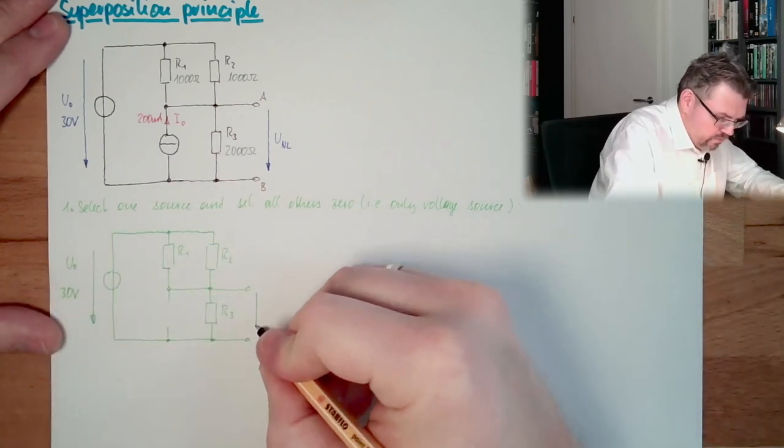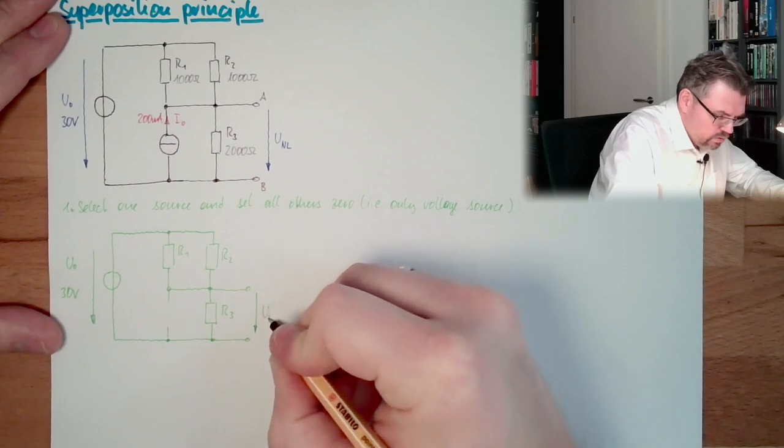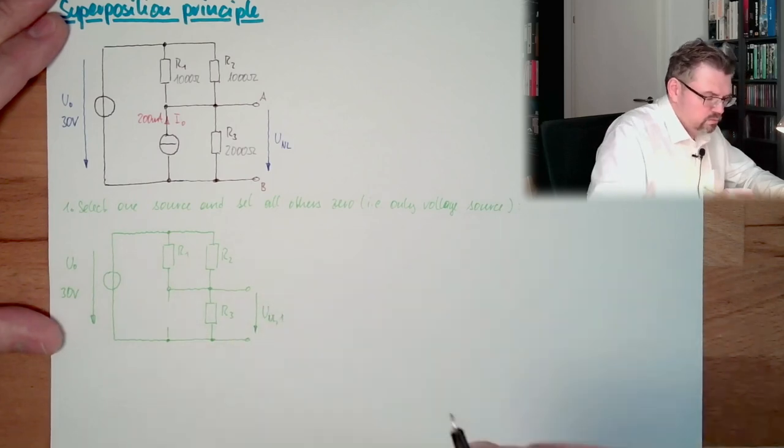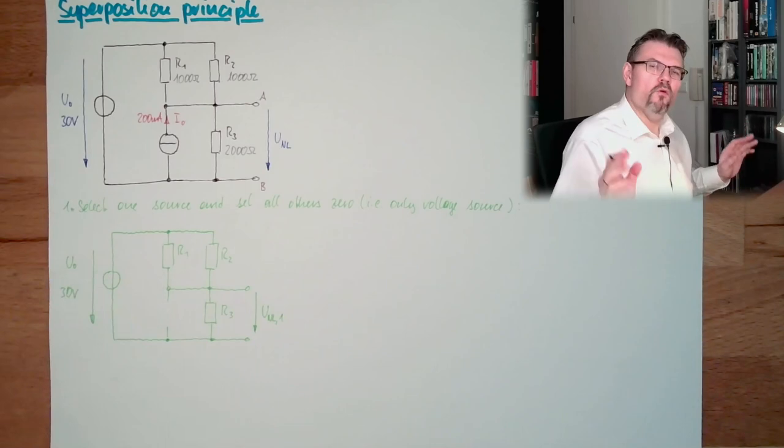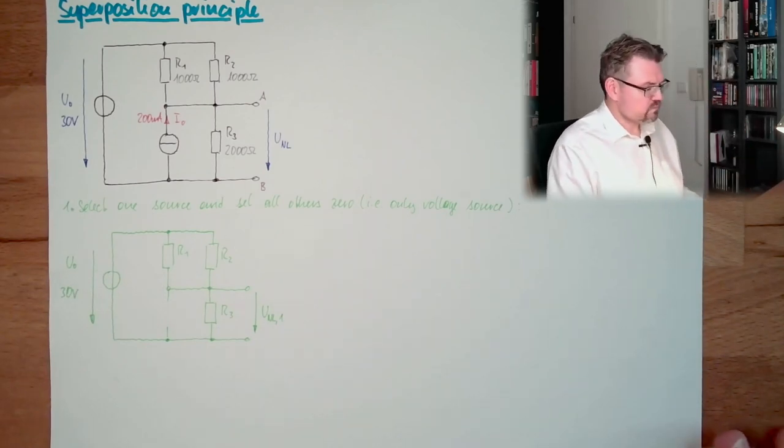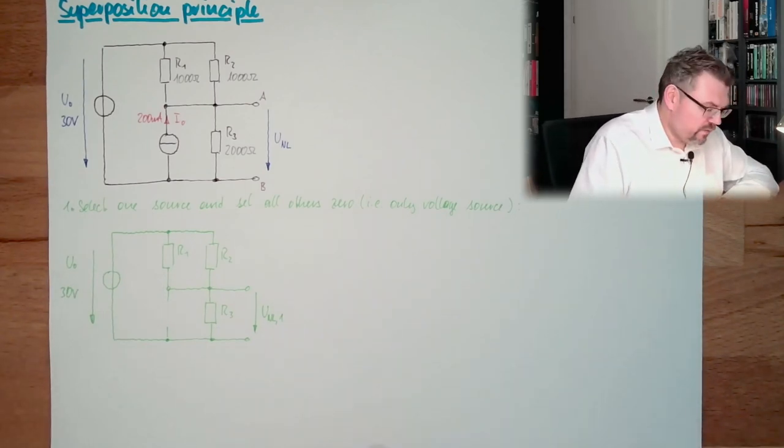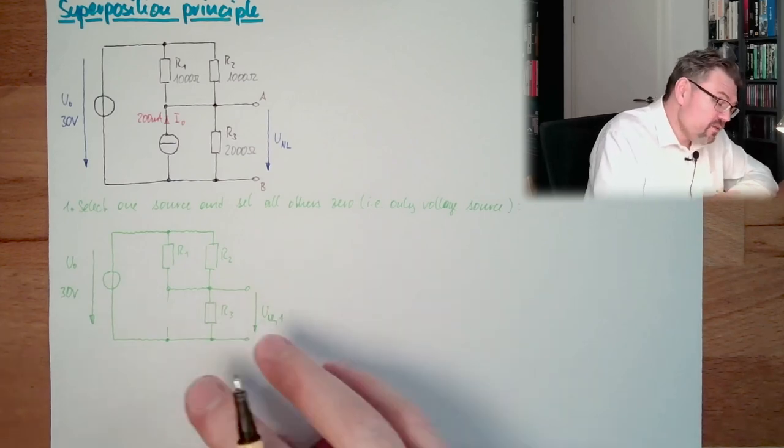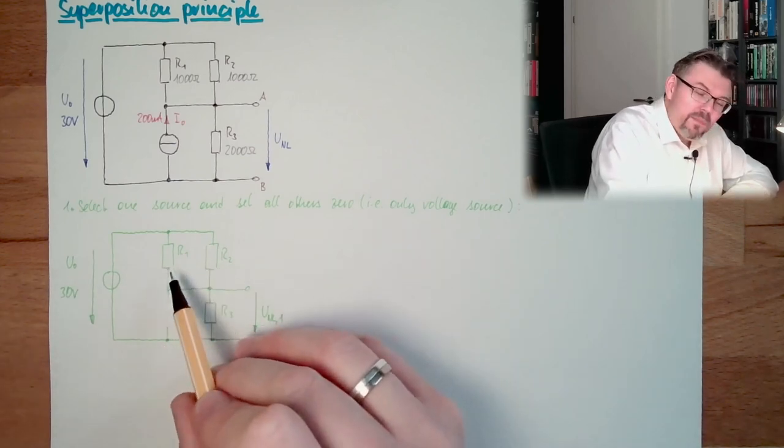Here we have our 30 volts. And here we would have no load 1, the first source. So let's see. What is our next step?